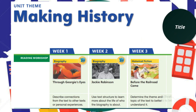The unit theme for volume four is Making History, and we will be introduced to different genres like biography and historical fiction. The first story we will read is Through Georgia's Eyes — we will describe connections from the text to other texts or personal experiences. Then we will read the historical fiction Before the Railroad Came and determine the theme and topic of the text to better understand them.